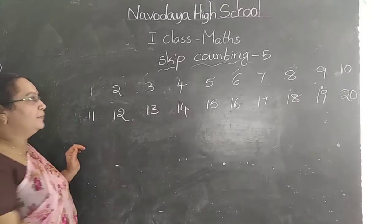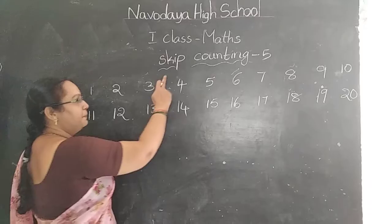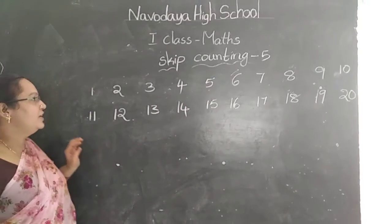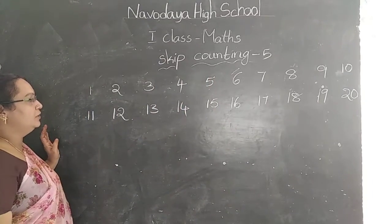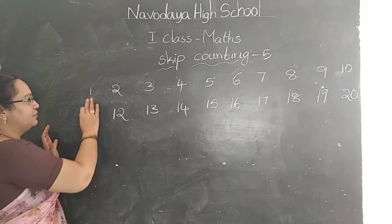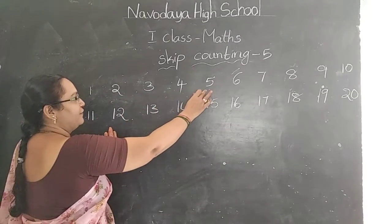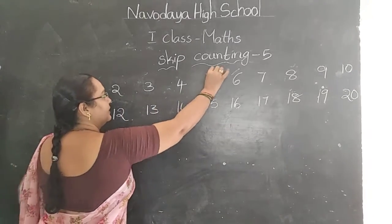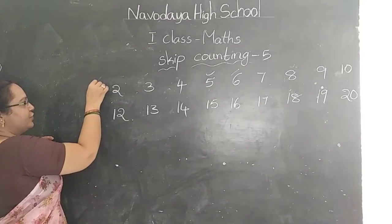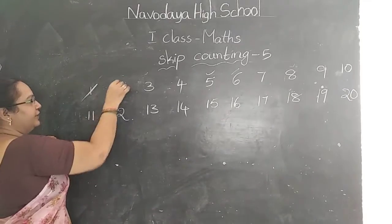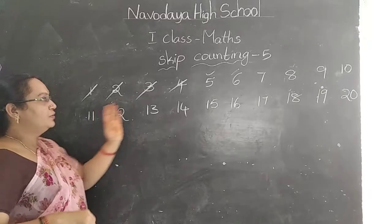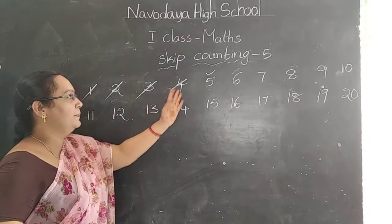Now children, look at the board. Skip counting of 5. Here we have to count 5 numbers: 1, 2, 3, 4, 5. That means we should skip 1, 2, 3, 4 — so 4 numbers skip.